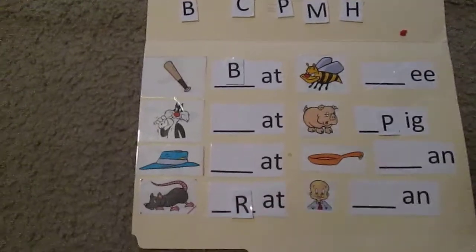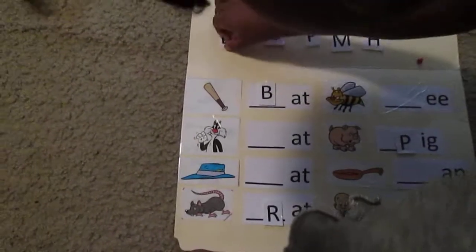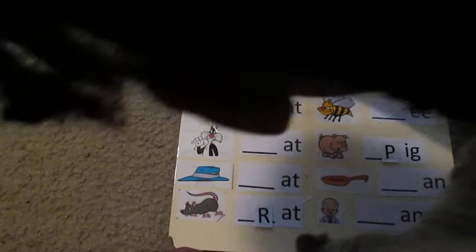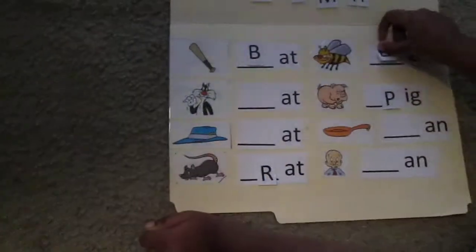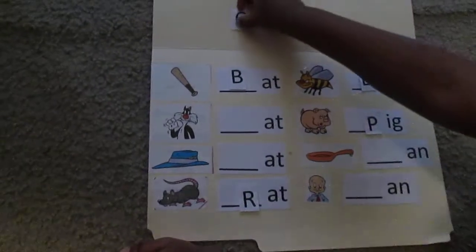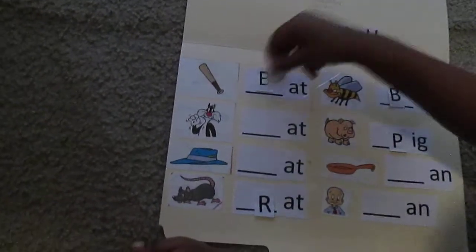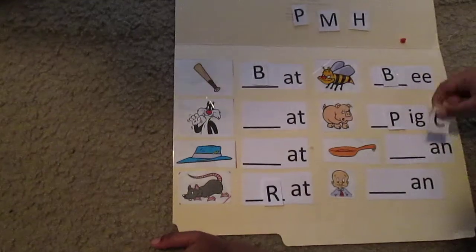What I did was I used an old manila folder, which makes for good storage. And I took those pages and cut out the pictures, particularly the ones with the short words for now. Now as she gets more familiar with these, we'll move on to more challenging words.